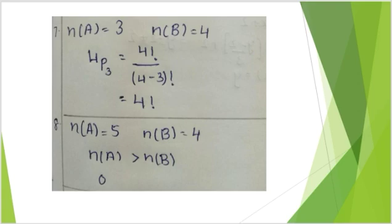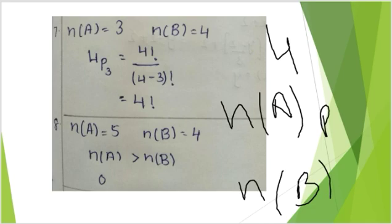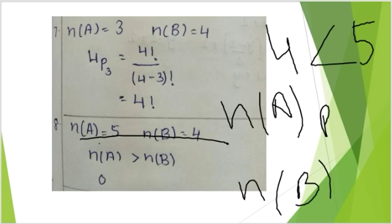If A = {1, 2, 3, 4, 5} and B = {a, b, c, d}, then the number of positive one-to-one functions from A to B — we should use the same formula, but we cannot apply it here because n(A) = 5 is greater than n(B) = 4. Since n(A) > n(B), the formula is not applicable, so the answer is 0. The option is A.